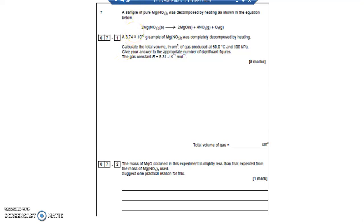Question 7. A sample of pure magnesium nitrate was decomposed by heating as shown in the equation below. 2 moles of magnesium nitrate makes 2 moles of magnesium oxide, 4 moles of nitrogen dioxide gas and 1 mole of oxygen gas.